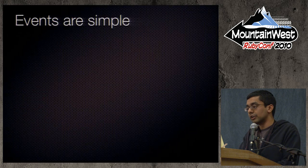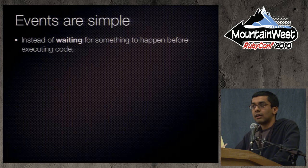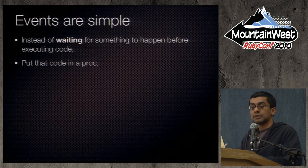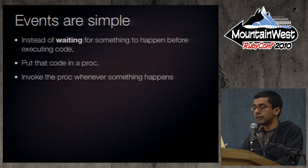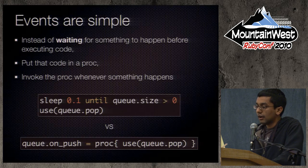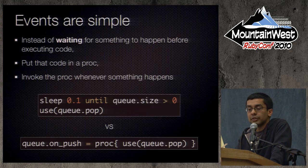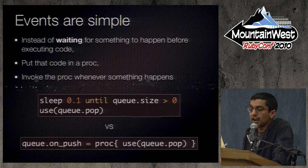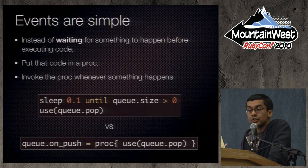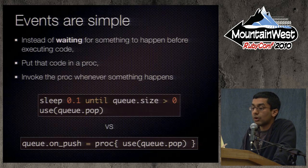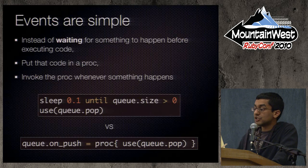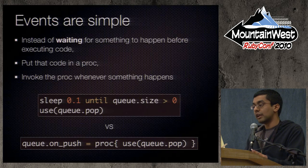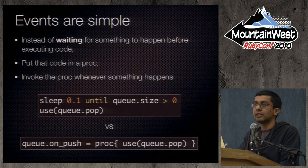Events are actually really simple. Instead of waiting for something to happen and then running some code, you take that code, put it inside a proc, and whenever that event triggers you invoke the proc. For example, say you have a queue and you're waiting for something to show up — the blocking way is to sleep until the queue has something. The event-driven way is to put your code inside a proc and say: as soon as someone pushes something onto the queue, that's when I want my proc to run. You're no longer blocking — other things can happen at the same time.